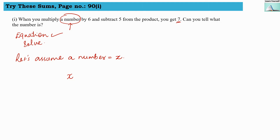We have to multiply this x with 6. So I am going to write here x multiplied by 6, and subtract 5 from the product. So whatever we get, we have to subtract 5 from that. You get 7, that means equals to 7. Now this is our equation.